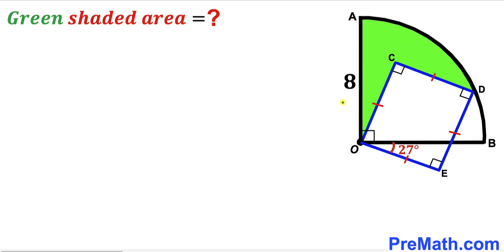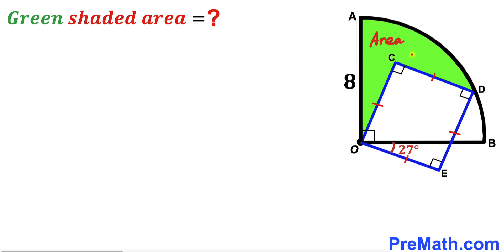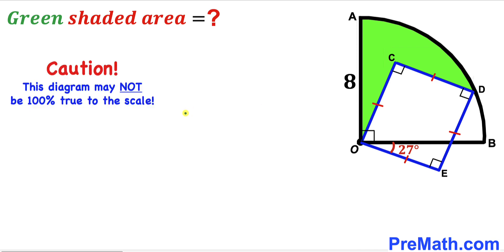Welcome to Pre-Math. In this video we have a quarter circle with center O and a blue square OCDE, as shown in the diagram, such that angle EOB is 27 degrees. The radius of the quarter circle is 8 units, and our task is to calculate the area of the green shaded region. Please give a thumbs up and subscribe, and keep in mind that this figure may not be 100% true to scale.